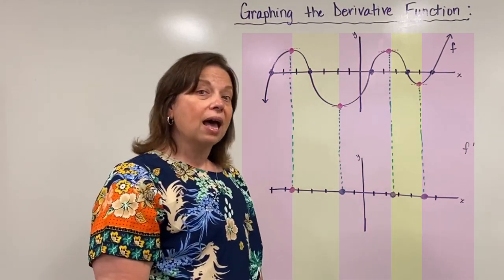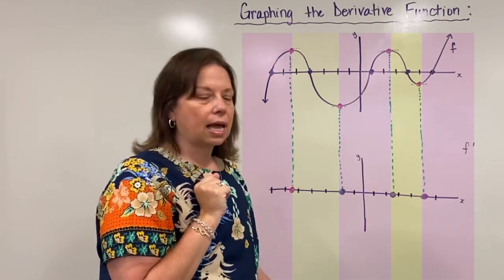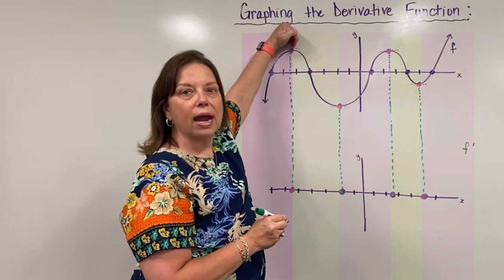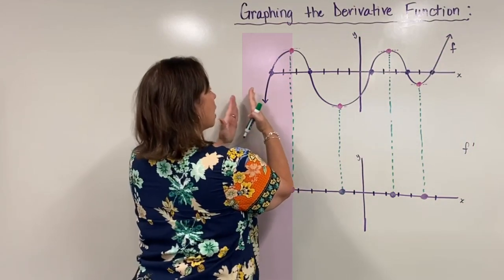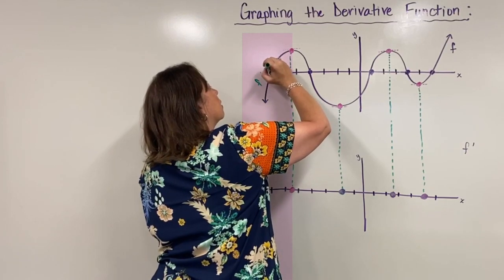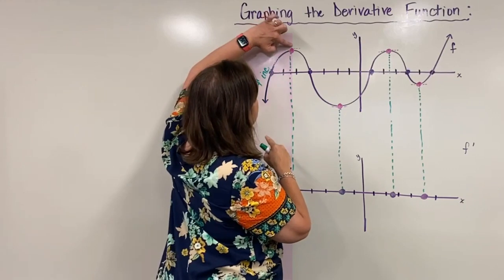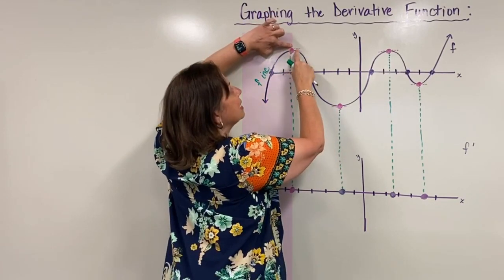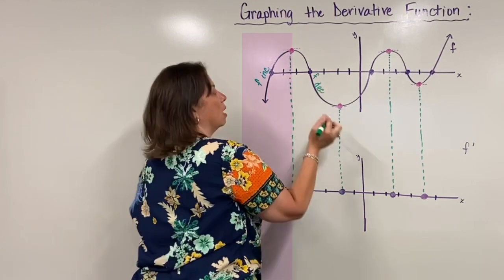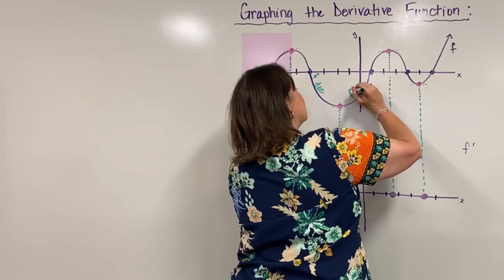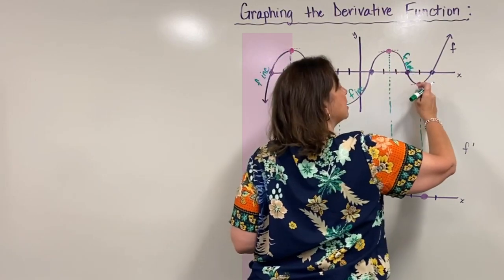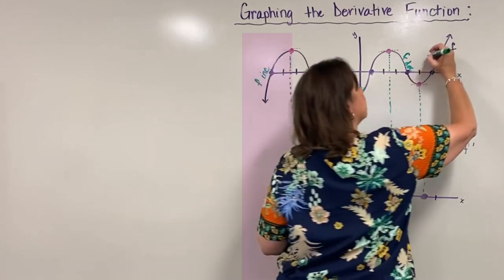Let's go back to the original function f and determine where it is increasing and decreasing. From the left side up to the first horizontal tangent, the original function's graph is increasing — so f is increasing. From that horizontal tangent to the next, the function is decreasing throughout. From that horizontal tangent to the next, f is increasing again. And from the last horizontal tangent onward to infinity, f is increasing.